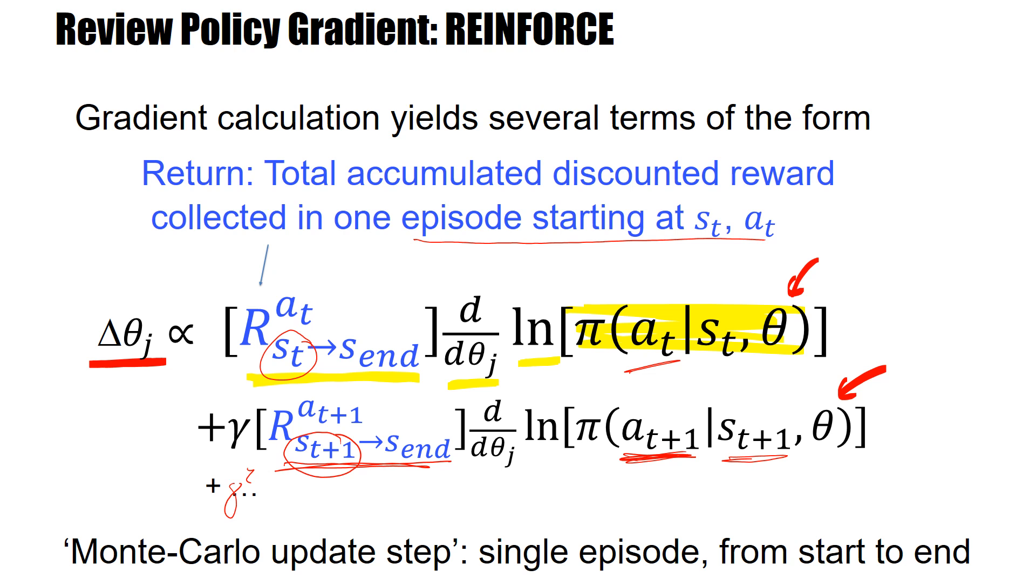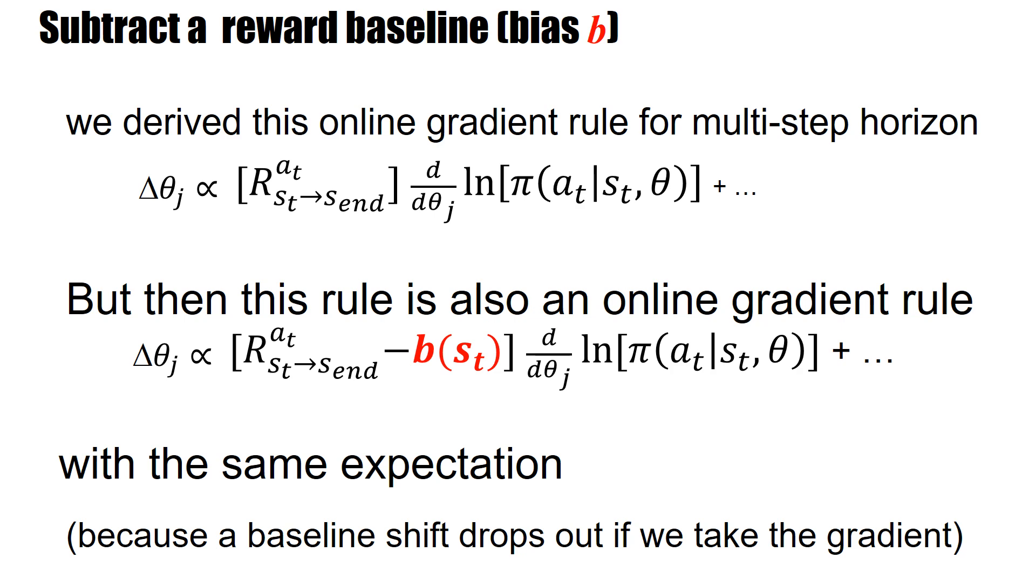If you compare this with the terminology of Sutton and Barto, going to the end of an episode before you update means we use a Monte Carlo update step. We run a single episode from start to end, and at the end we have our return for that episode and we use this return to update. We derived this update rule for this multi-step policy gradient method. But then, if this is a gradient rule, then the following rule is also an online gradient descent rule, a gradient ascent on the total return.